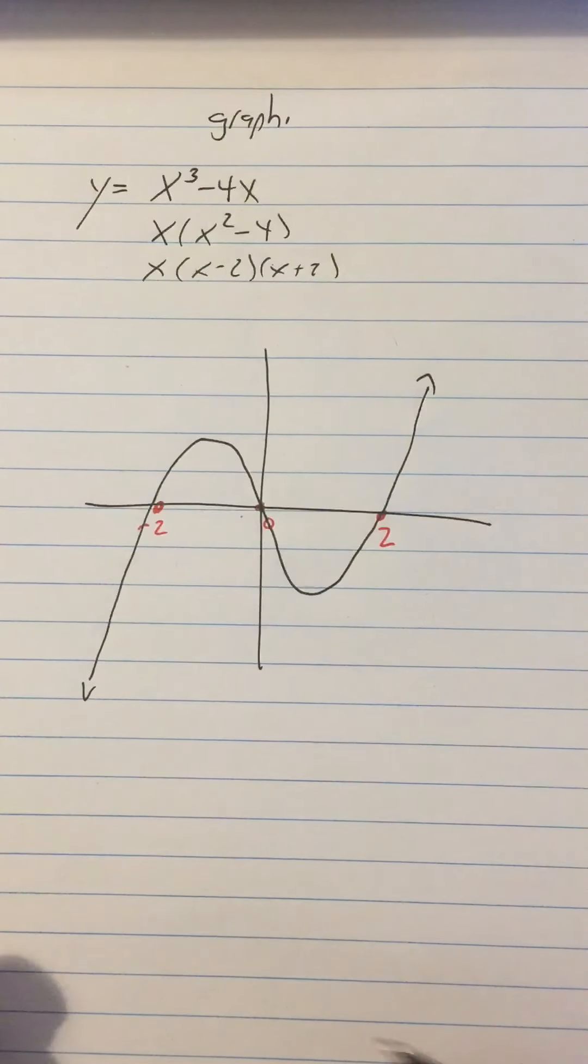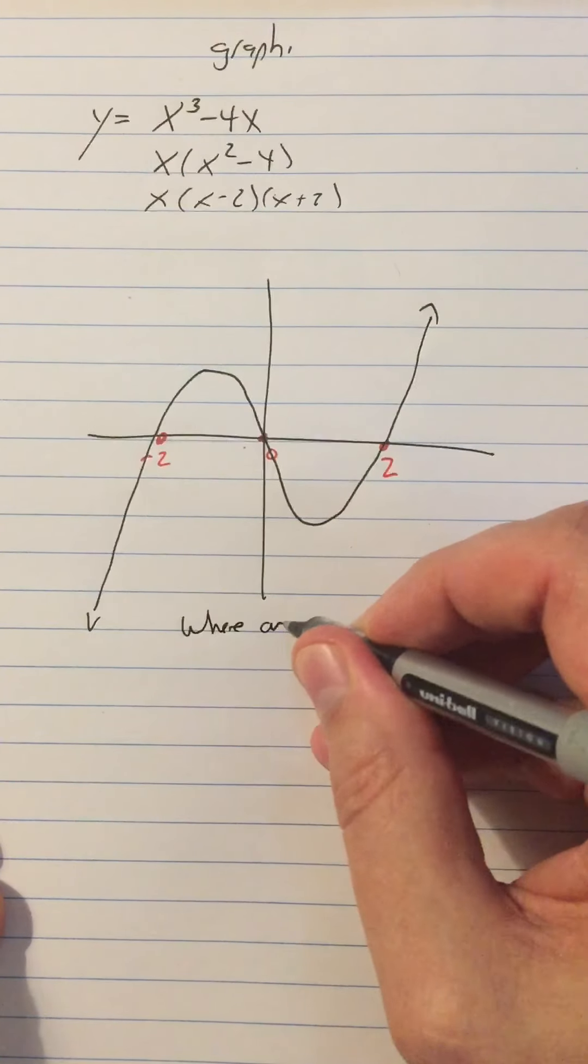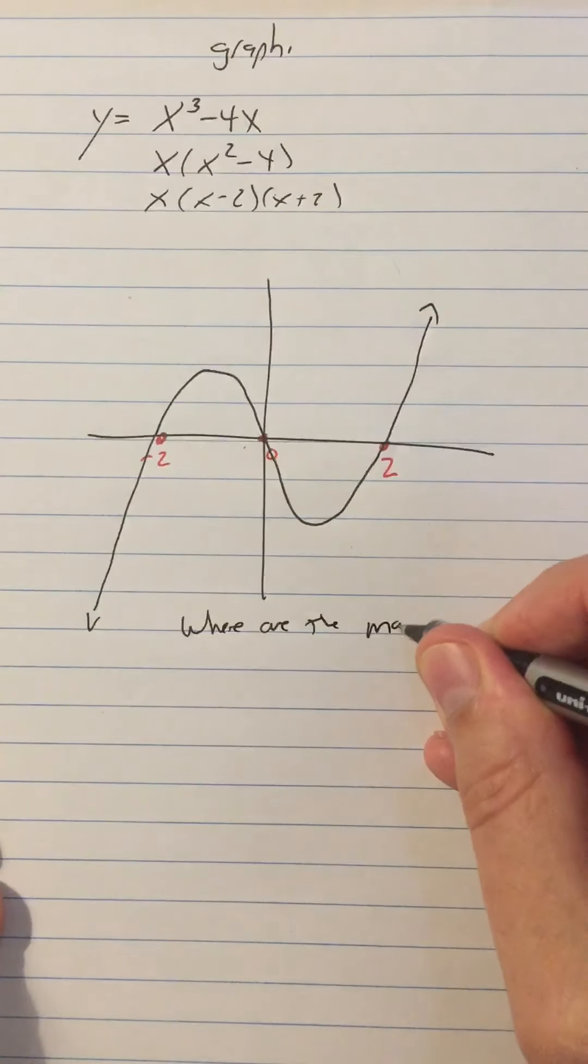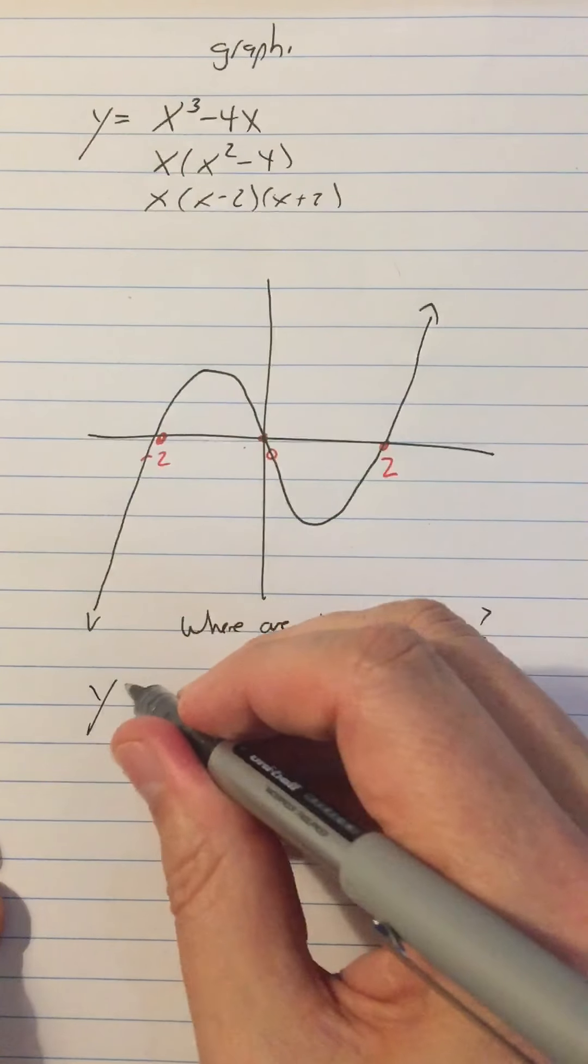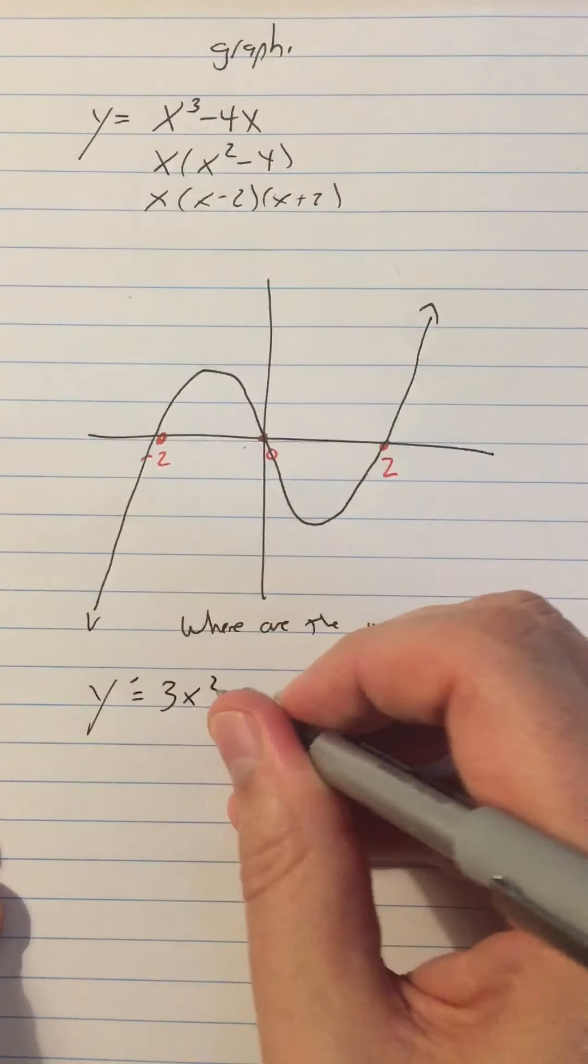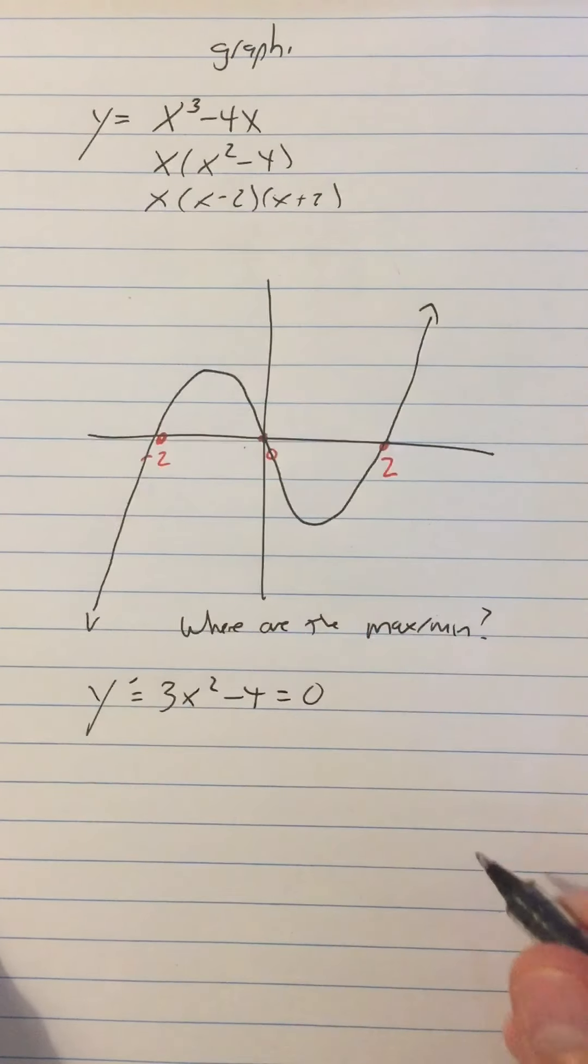Where are the maxima? That's what we can now answer, is where are the max and the min. So we can just say, all right, well, y prime is equal to 3x squared minus 4. So we just set that equal to 0, and that's going to tell us where our max and min are.